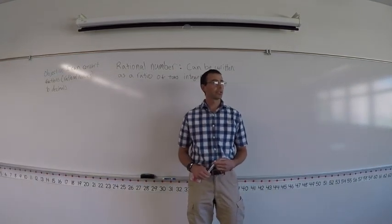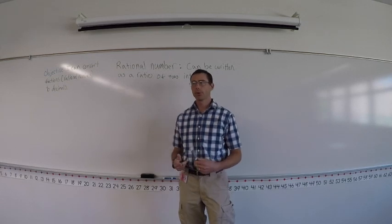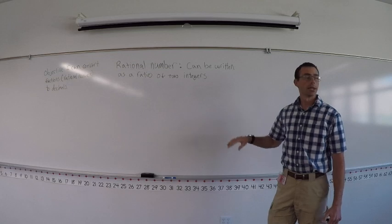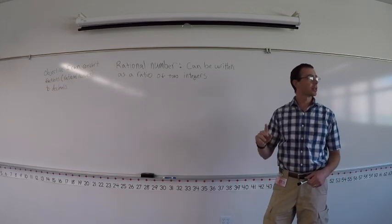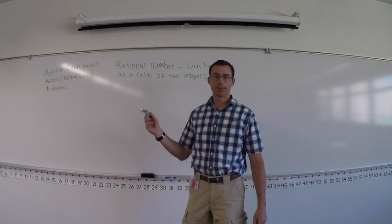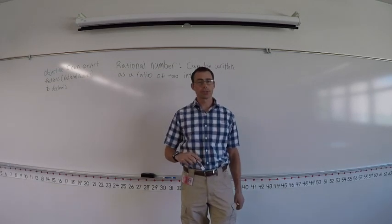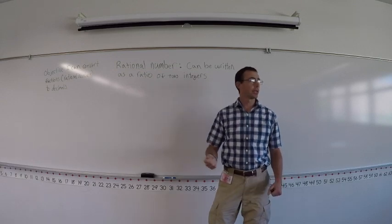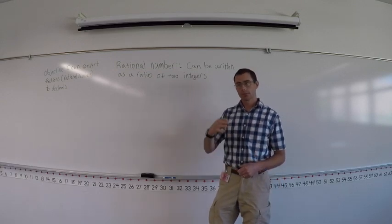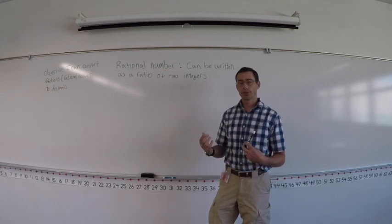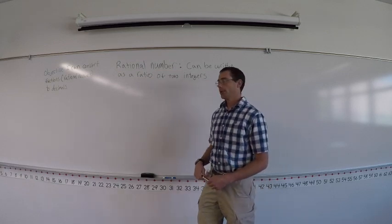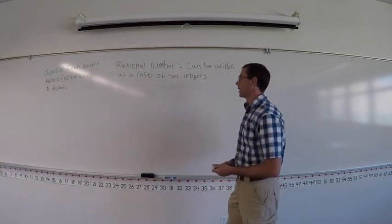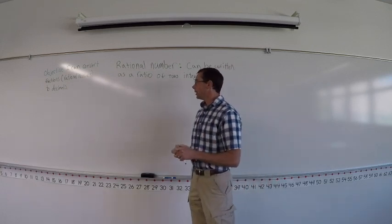We're going to do two things: one more example of converting a rational number to a decimal, and talk a little more about our first objective — being able to identify rational numbers. We can identify rational numbers in fraction form easily. We know that any integer as a ratio to another integer gives us a rational number. But what if it's in decimal form? We're going to look at that.